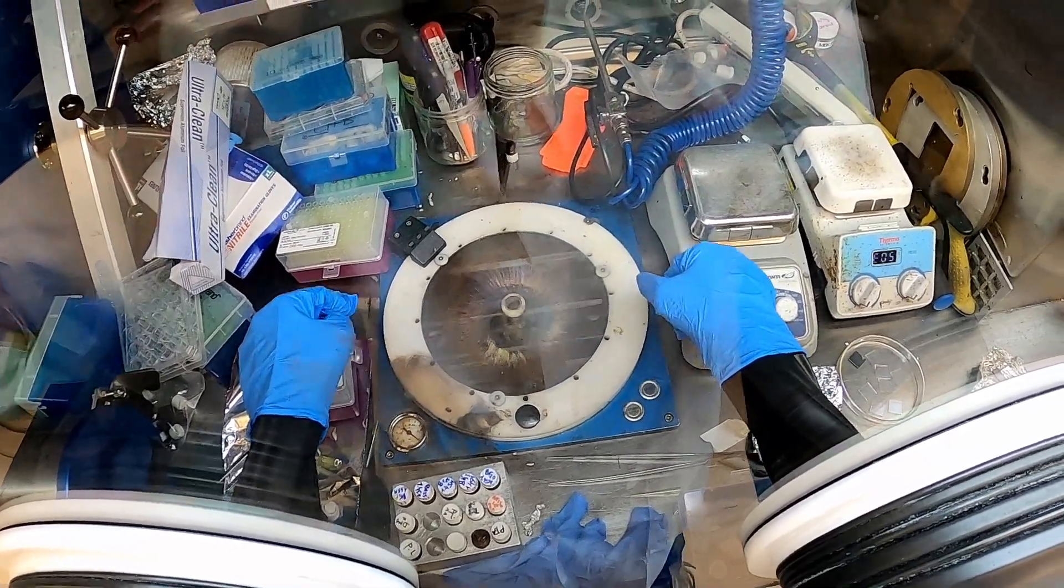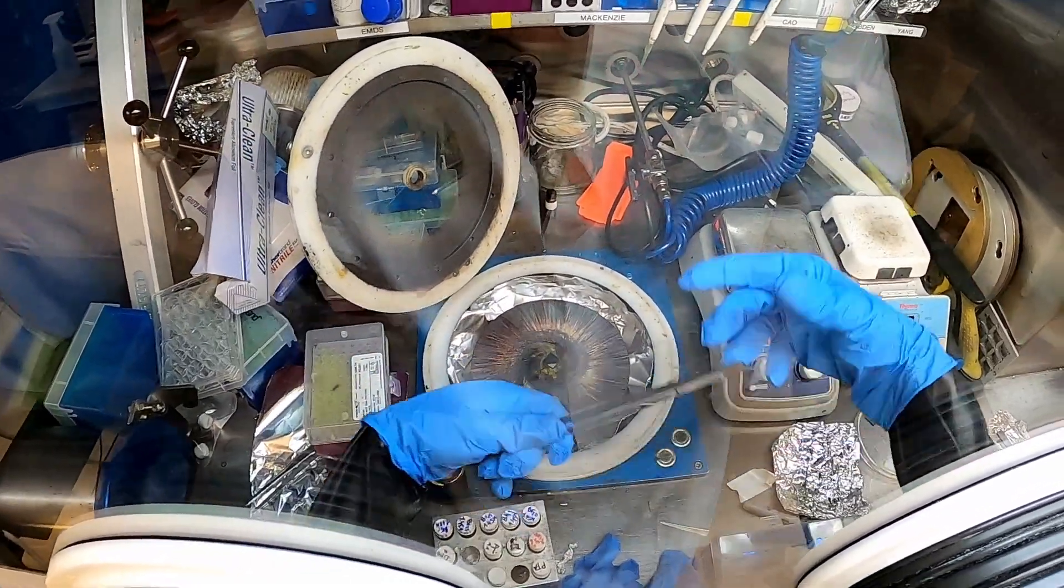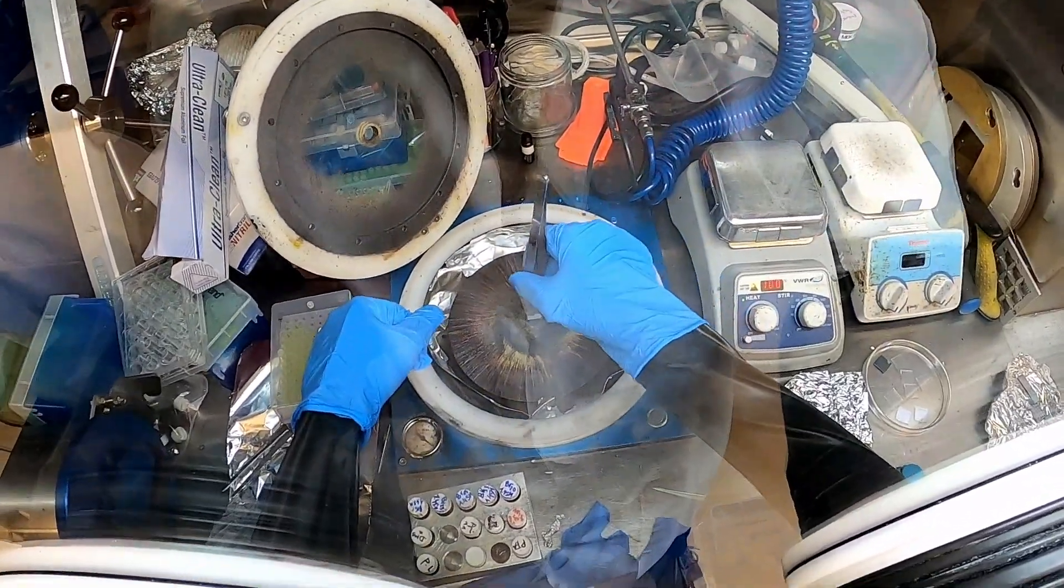Once the spin coater stops, the sample will be transferred to a hot plate and annealed to drive off the remaining solvent. You can see the film has changed color.